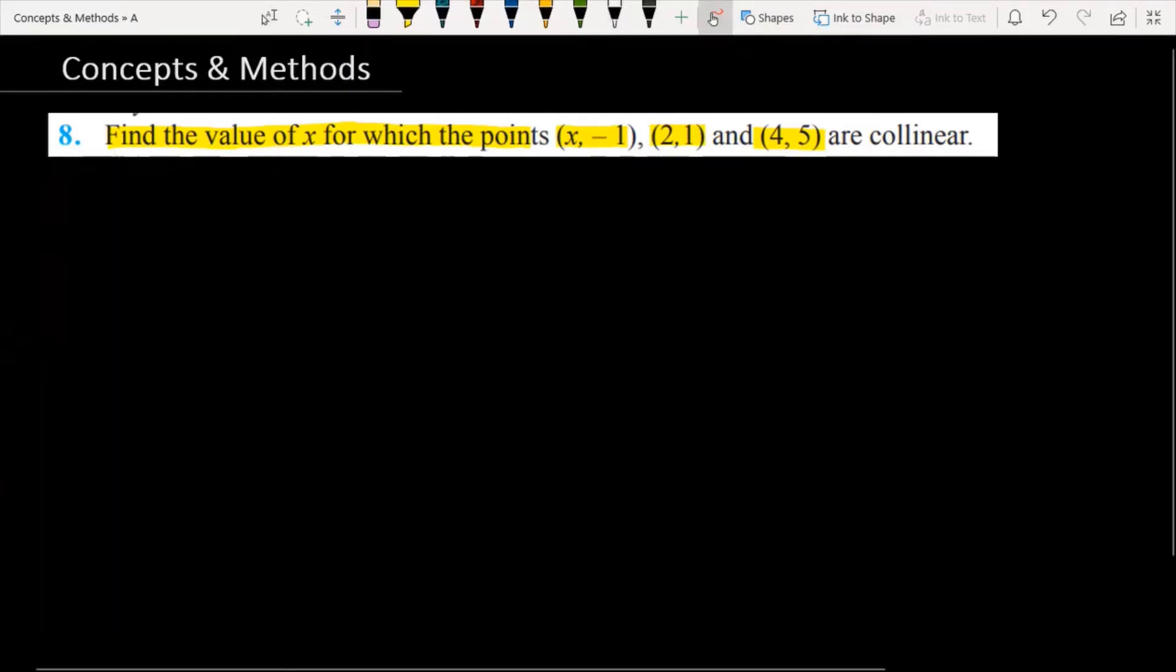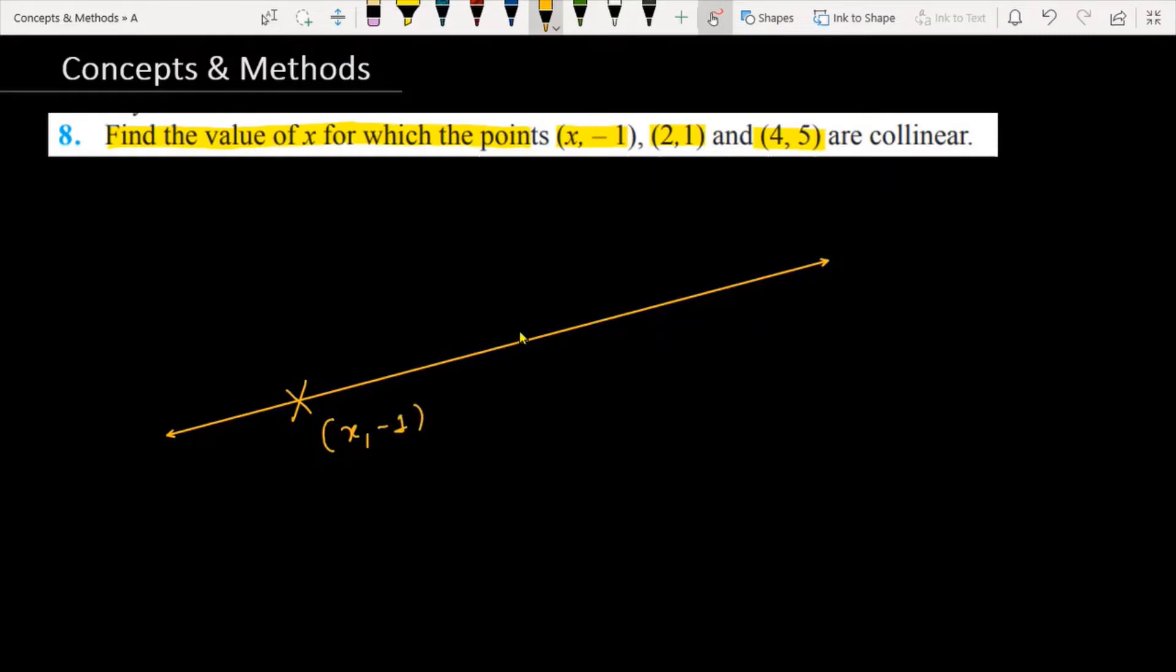Suppose you have three points and they are collinear, meaning three points in one line. The first point has coordinate (x, -1), the second point is (2, 1), and the third point is (4, 5). This is point A, this is point B, and this is point C.